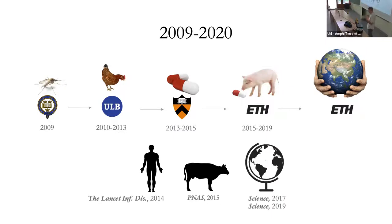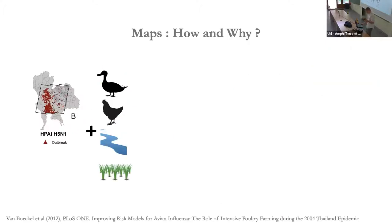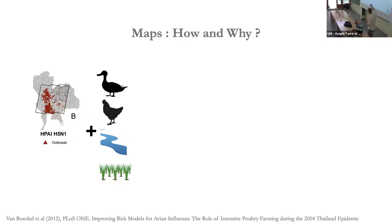Let's look together at the simplest possible example of what disease mapping consists of, with the case of bird flu in Thailand. Imagine we have a dataset about farm locations — typically coordinates on a map — and some of these farms have had bird flu outbreaks (shown in red). We also have data about the distribution of chickens and ducks, which are healthy carriers of most avian influenza viruses, and maps of the distribution of rivers, wetlands, and rice paddies.